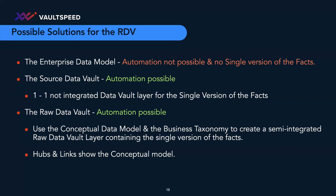You use the conceptual model and the business taxonomy to create a semi-integrated raw Data Vault layer containing the single version of the truth and the system of records. It's semi-integrated because you are not allowed to have any business rules — so for some integration you would need business logic which you probably have to do inside your business data layer. The goal is to have the conceptual model represented in the hubs and the links, because then you can show the model to the business through just the canvas of hubs and links, and communicate at the conceptual model level showing where data is actually available.